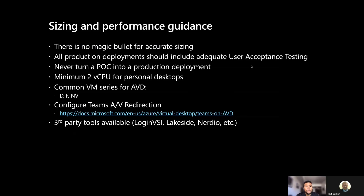For sizing and performance guidance, there's no magic bullet for accurate sizing — all production environment deployments should include adequate user acceptance testing. Common VM series for Azure Virtual Desktop are D, F, and NV. Going up the stack in terms of power and memory, D series is for medium-light users, and NV series is for heavy and power users. You can also look at Teams audio-visual redirection at the provided link. We do have third-party tools available, so definitely look into our partner list for management and monitoring.